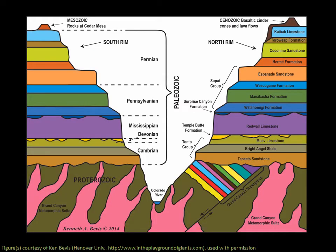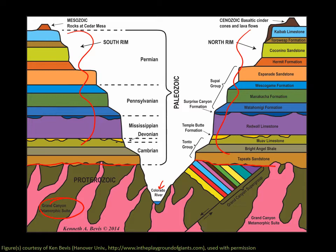Let's go back to the Grand Canyon. This is a cross section looking at all the various rocks in the canyon. Here's the Colorado River at the bottom. Below this line is the boundary between the metamorphic rocks and igneous rocks — the pink stuff — which is on the bottom of the canyon. And all of this on both sides of the canyon are the sedimentary rocks that we've seen before. Let's talk about what happened here to form these different rock types.